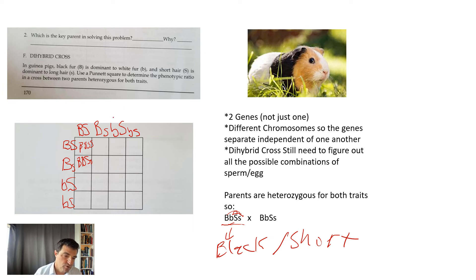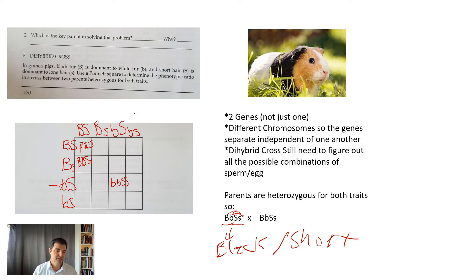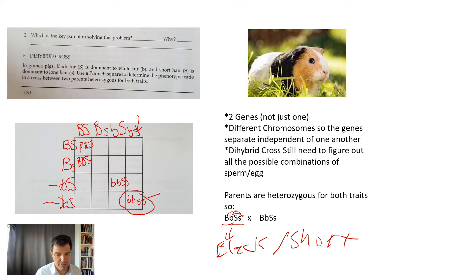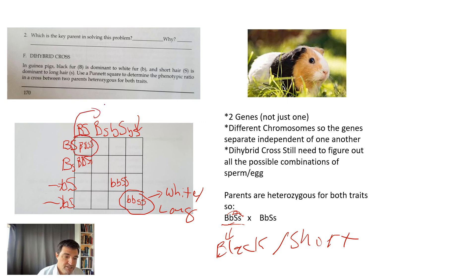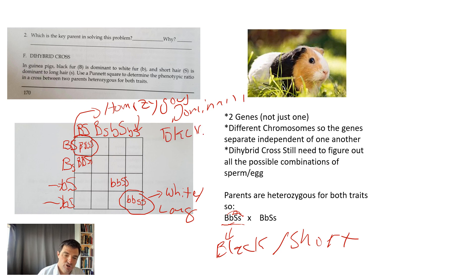Continuing through the boxes: little b big S sperm fertilizing little b big S egg gives little b little b big S big S. Little b little s sperm fertilizing little b little s egg gives little b little b little s little s — that one ends up being white with long hair, homozygous recessive for both traits. The one up here is homozygous dominant for both traits — black fur and short hair.